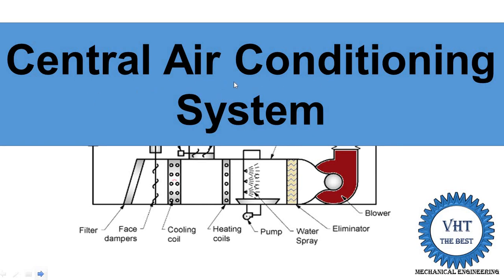Central air conditioning is generally used for larger spaces, or for cooling different rooms at different temperatures. Window and split systems are used for small rooms, up to 3 or 5 ton capacities. When the capacity increases to 10 ton or 15 ton, it is better to use central air conditioning systems.